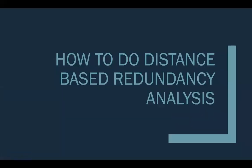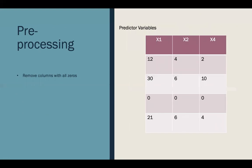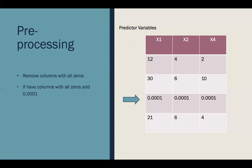Just like any technique, there is some pre-processing that you should do before you attempt a distance-based redundancy analysis. The first step is that if you have any columns with all zeros in either your response or predictor variables, you should remove these from your data set. Secondly, if you have any rows with all zeros, you can add a small value such as 0.001 to these rows so that you can still perform the analysis while keeping them representative of zero.